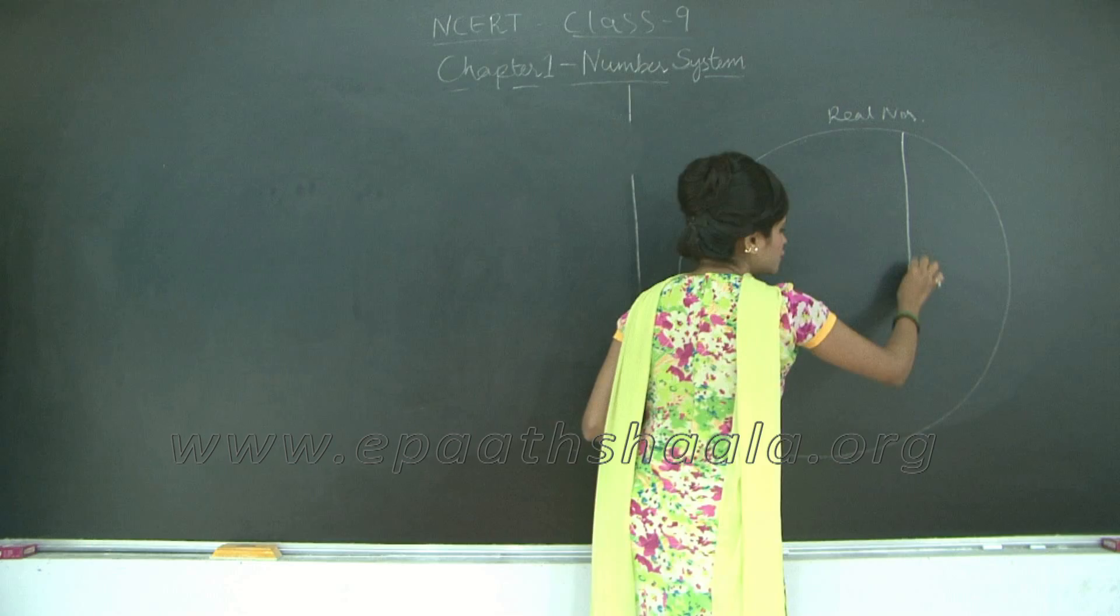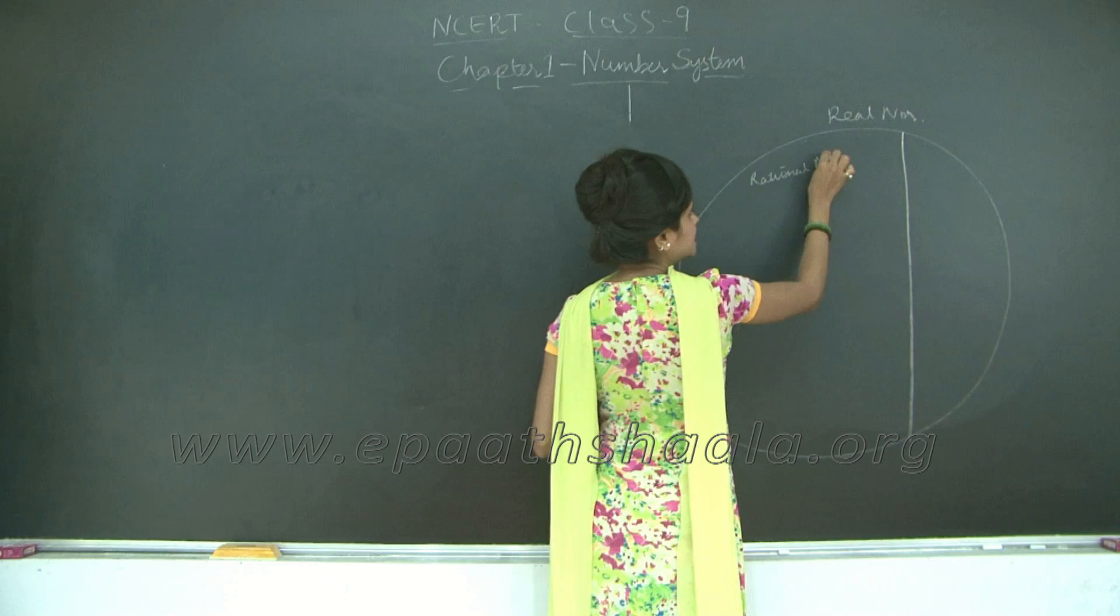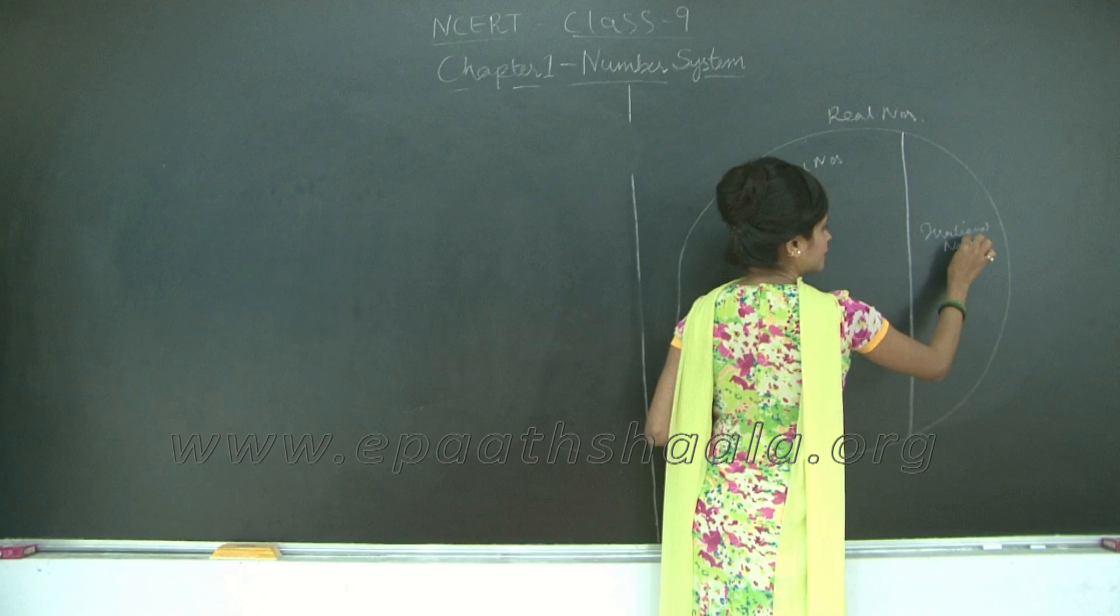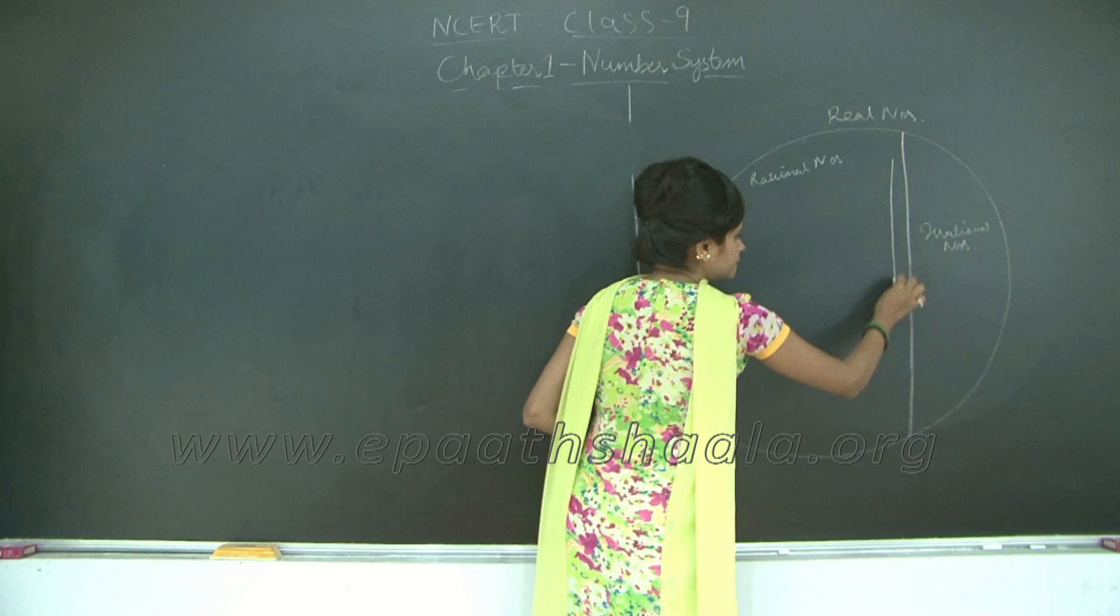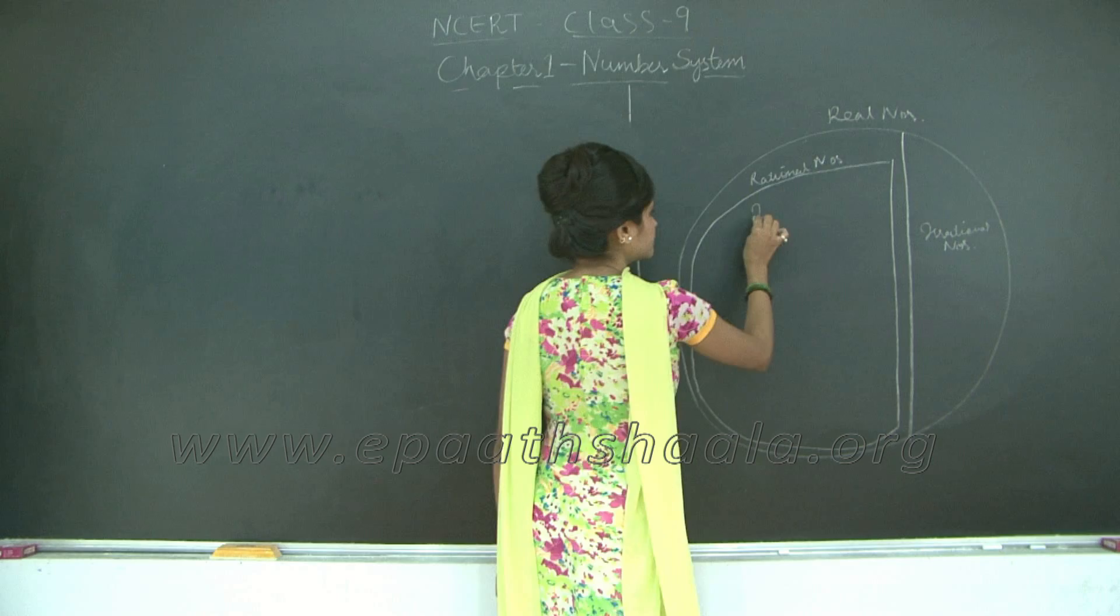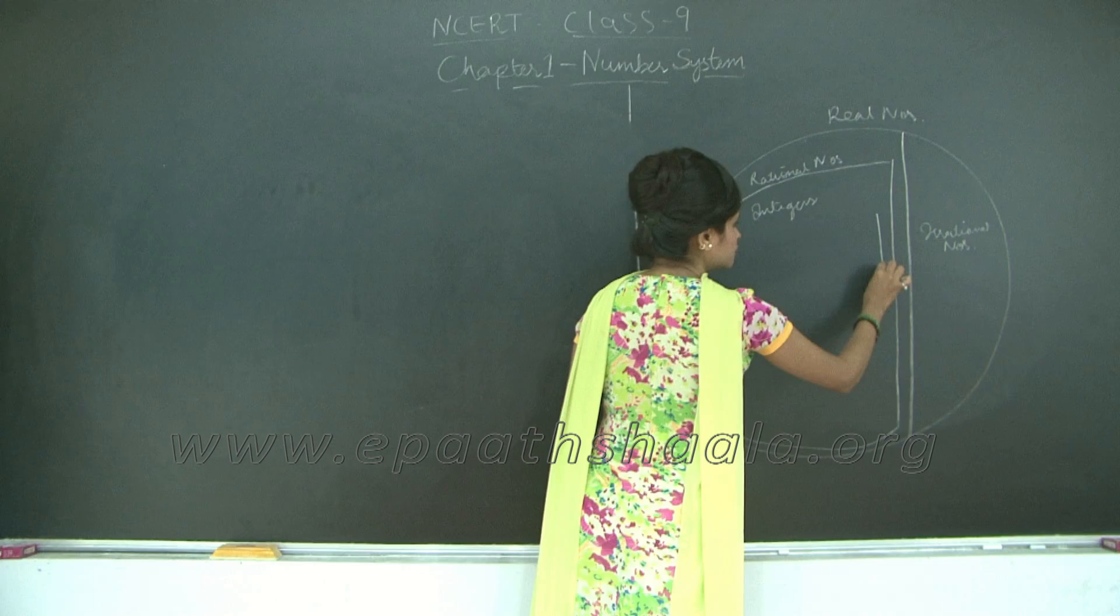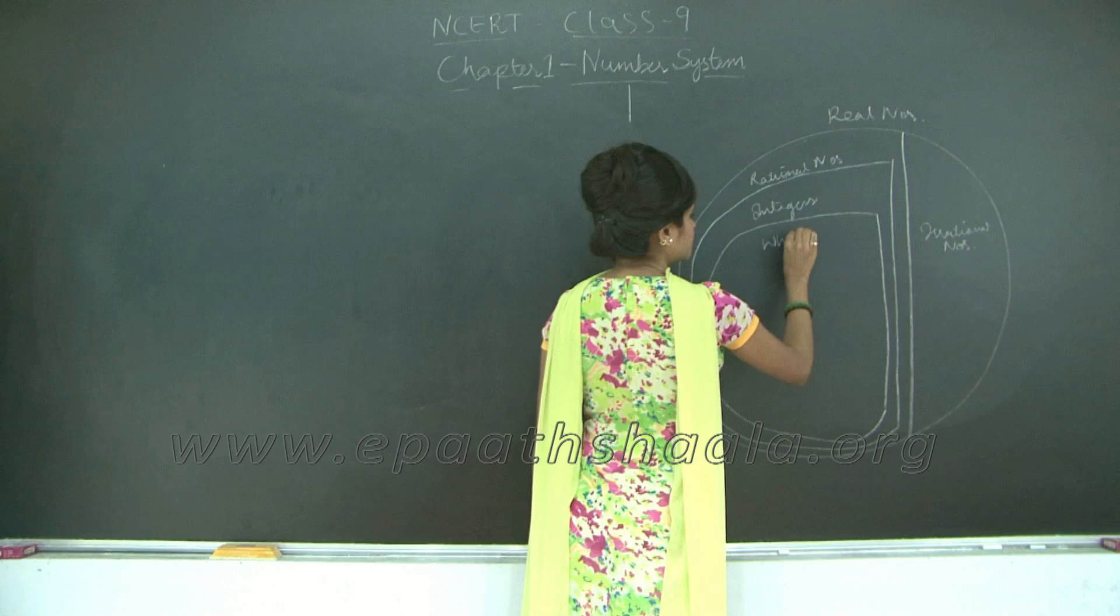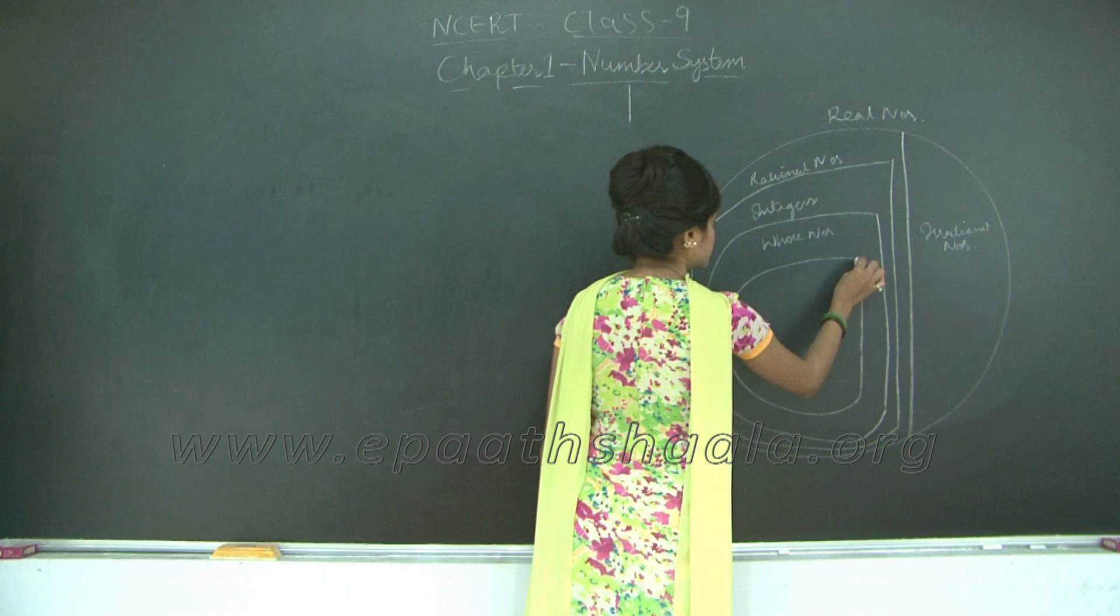We know that real numbers are further divided into two categories. One is rational numbers and the other one is irrational numbers. Now within rational numbers we have different other categories. The next broader subcategory of rational numbers is integers. Within integers we have whole numbers and within whole numbers we have natural numbers.